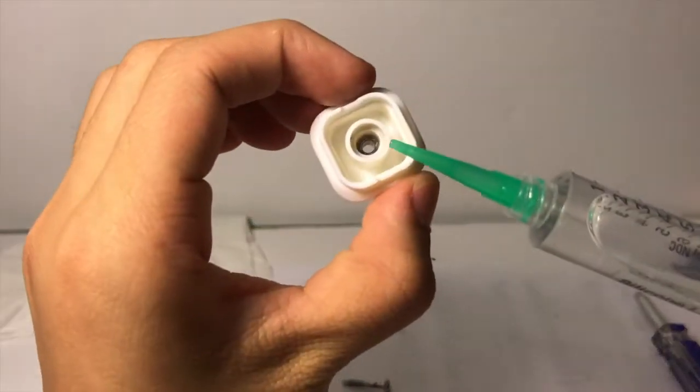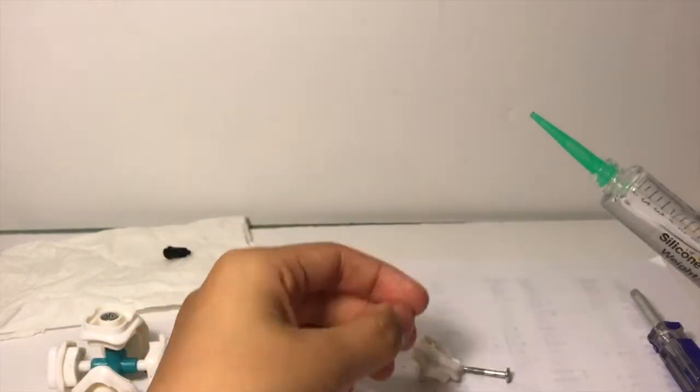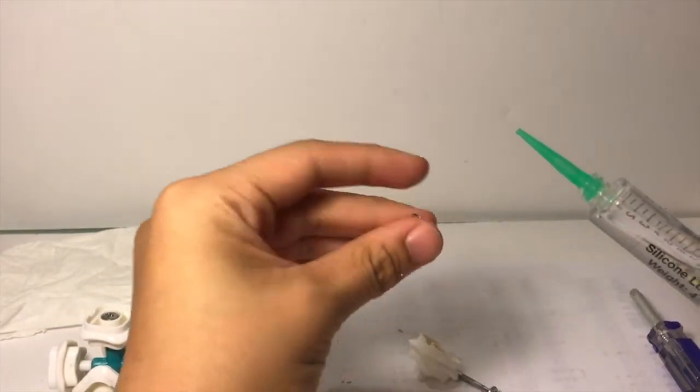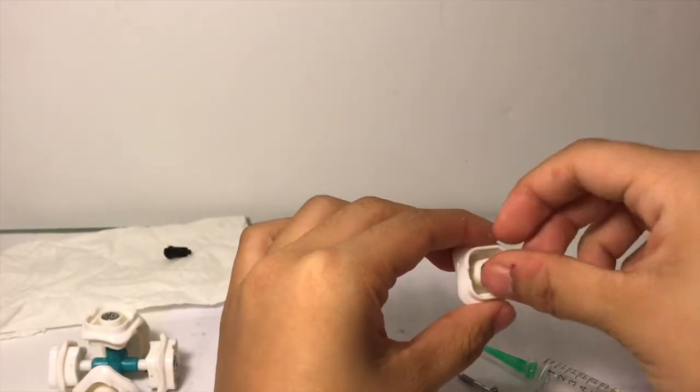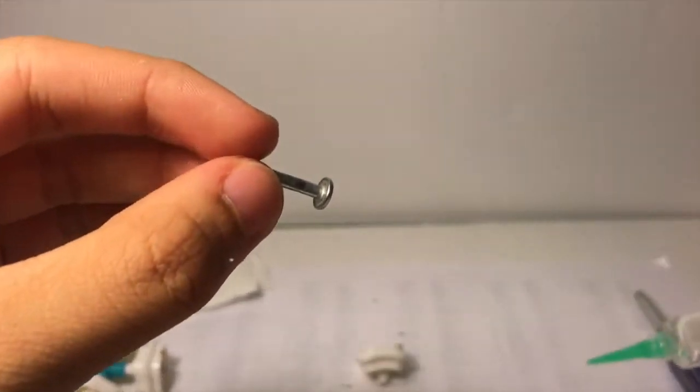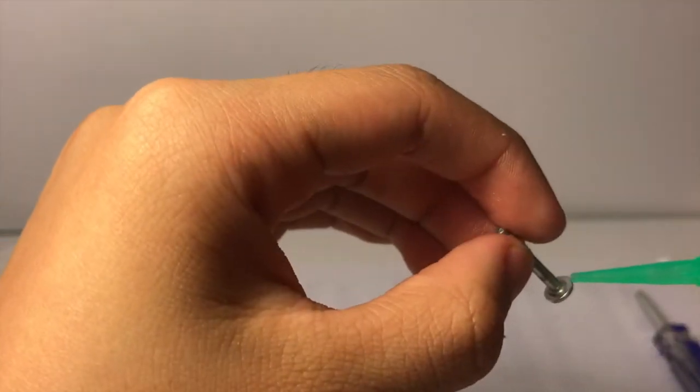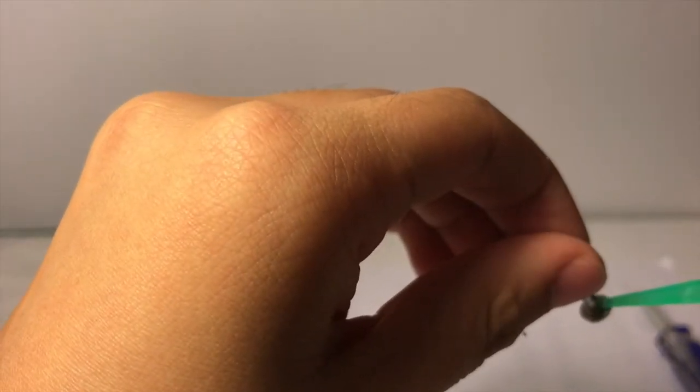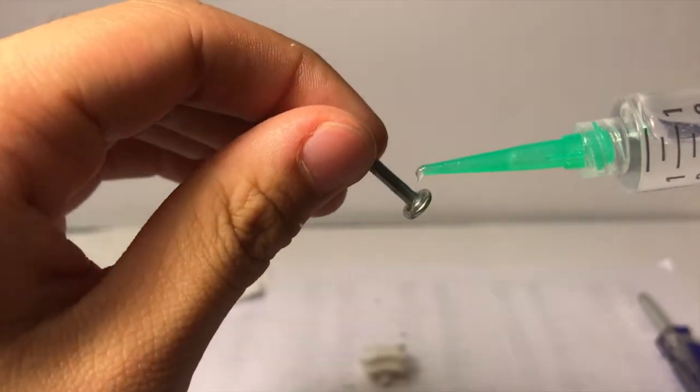After I've lubed the inside circle, I'm going to take my spring, I'm just going to put it down in here. Next I'm going to take my screw and I'm going to put lube around the head.